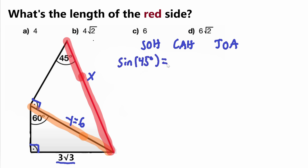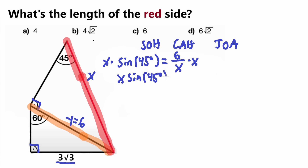We set up the equation: sine(45°) = opposite / hypotenuse = 6 / x. Multiplying both sides by x gives x × sine(45°) = 6. Then dividing both sides by sine(45°) gives x = 6 / sine(45°).